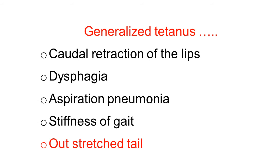Generalized tetanus symptoms in dog and cat: the mouth is partially open and the lips are retracted back. Because of the tightness of the jaw, there is difficulty in eating and dysphagia. If the dog and cat eat, there are all the chances to have aspiration pneumonia. Because of the contraction of skeletal muscles, there is stiffness of gait, and spasmodic contraction of the spinal muscles of back and tail. The tail is outstretched, becomes straight and stretched — this is also a characteristic sign.